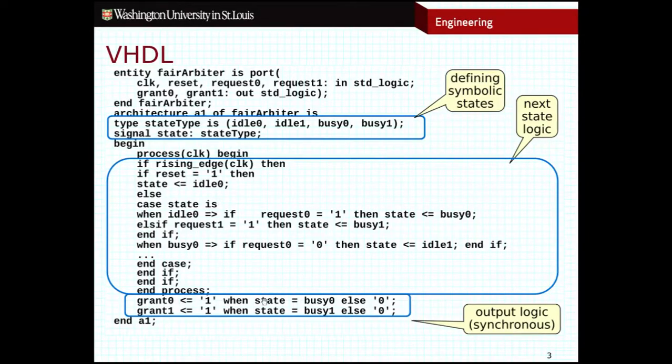So you can see that when the state is set to busy zero, I'm going to set grant zero to be one. Otherwise, I want that value to be set to zero. And then a similar statement for our grant one output. So this is how the output will look in the case of a Moore finite state machine. For a Mealy finite state machine, it actually would be a little bit different. Again, I'm going to leave that as an open question for you to figure out. In fact, I may ask you about this the next time that I see you in class.